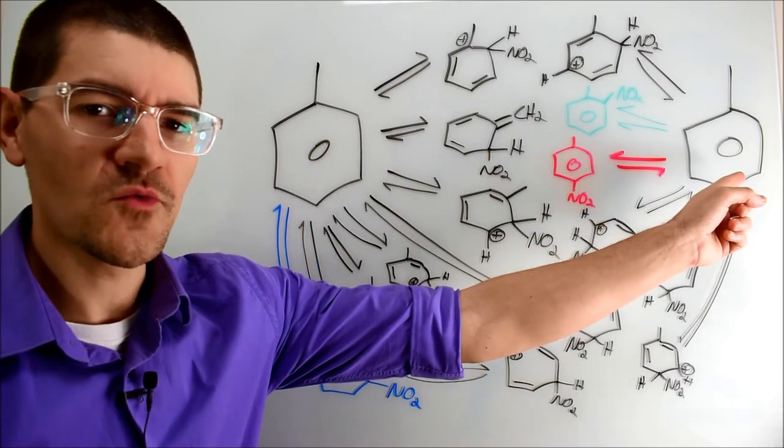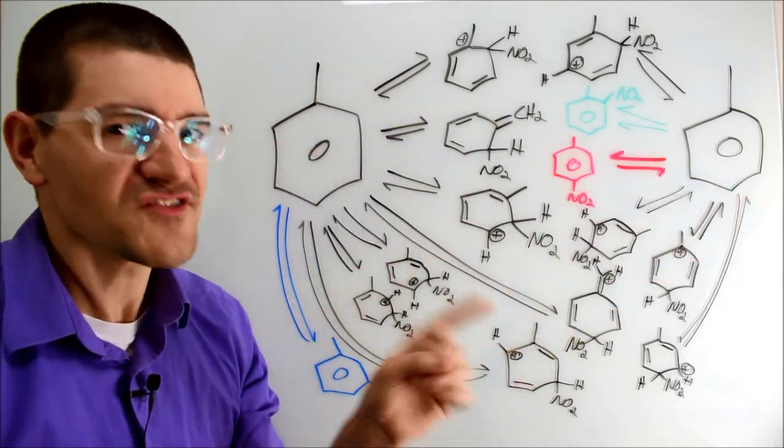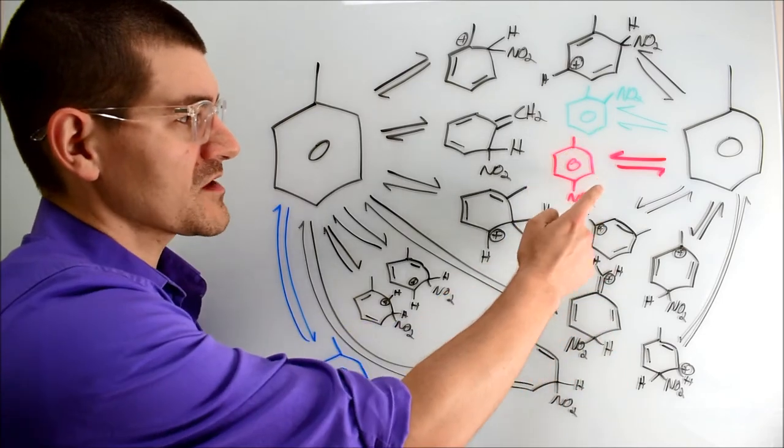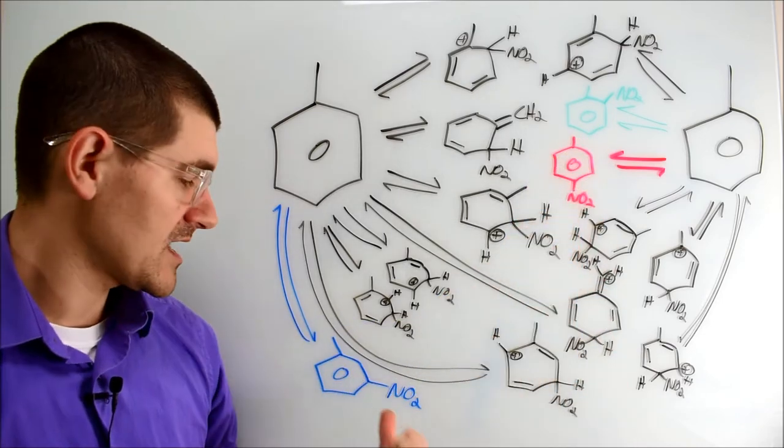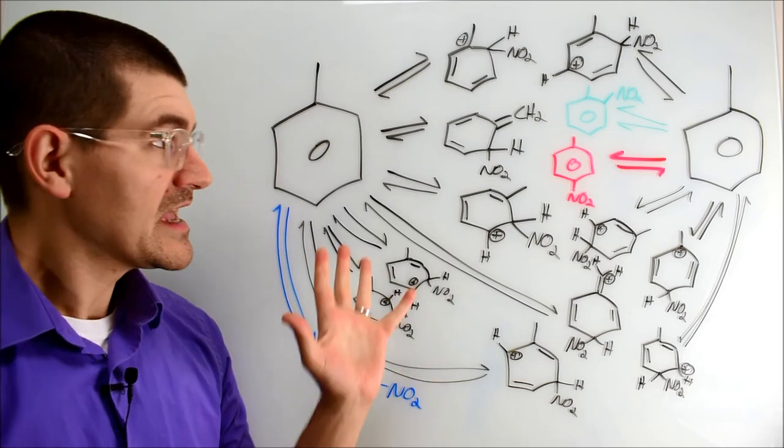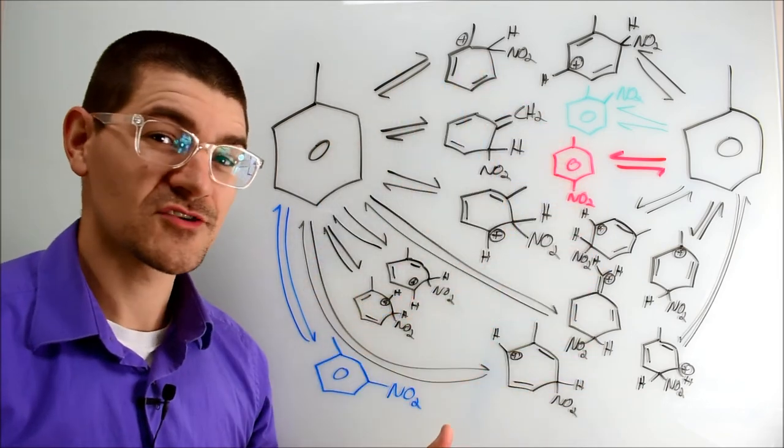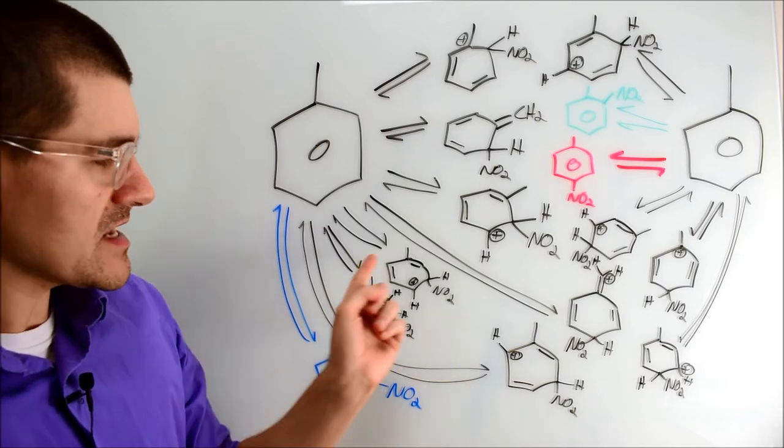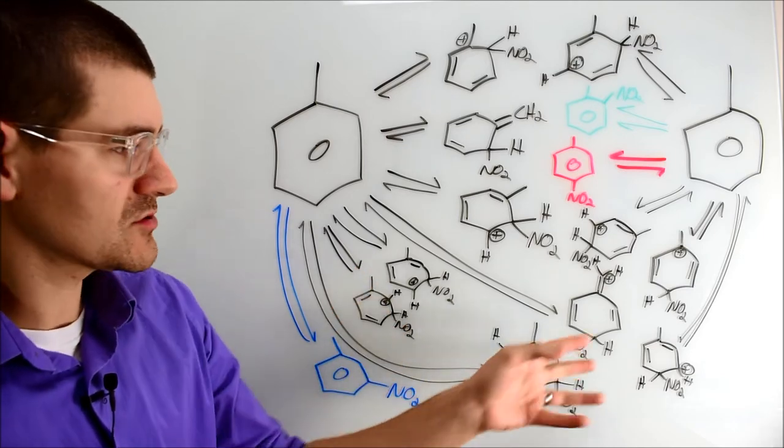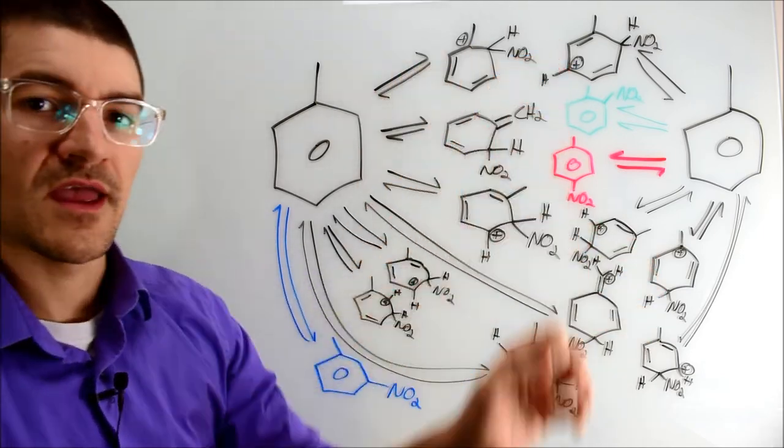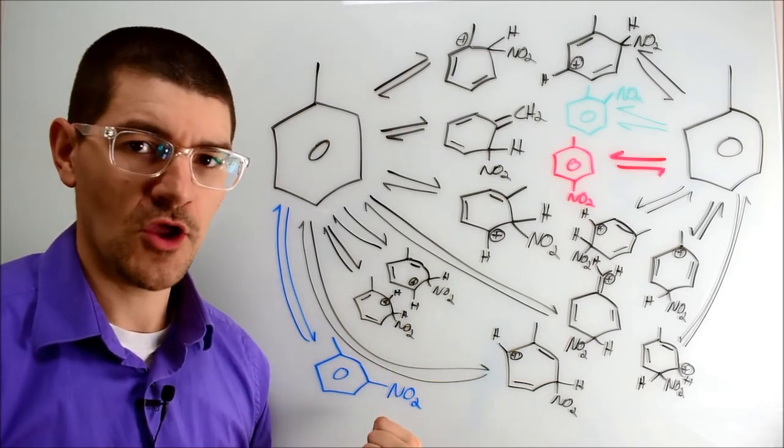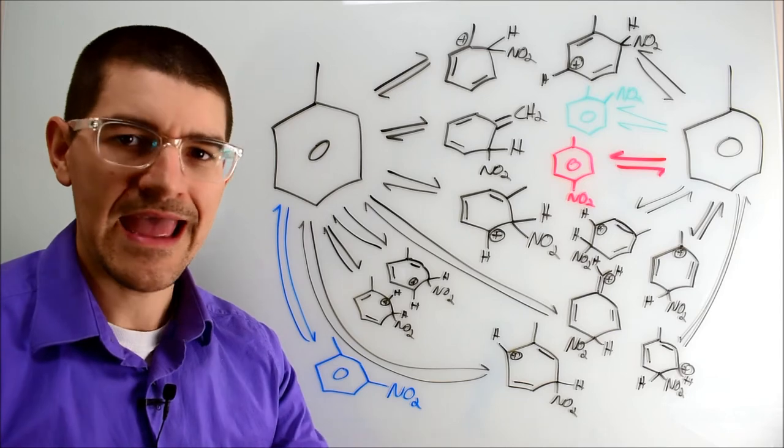If we start with our two toluenes over here, because there were too many arrows to just have one, you can see I get three main constituents: my ortho-nitrotoluene, my para-nitrotoluene, and my meta-nitrotoluene. If you then look inside all of the resonance structures that you can get during this substitution, you'll see that there are three meta-substitution resonance structures and four each for the ortho and the para.